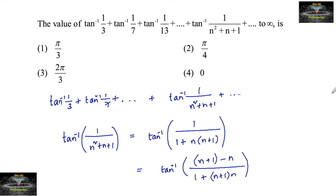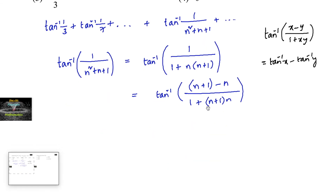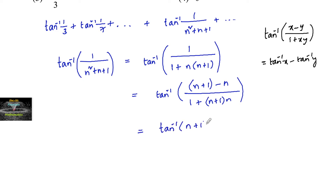While solving such type of questions we need to keep in mind that tan inverse of (x minus y)/(1 + xy) equals tan inverse x minus tan inverse y. Using this formula, we can simplify tan inverse of (n+1 - n)/(1 + n(n+1)) as tan inverse(n+1) minus tan inverse(n).